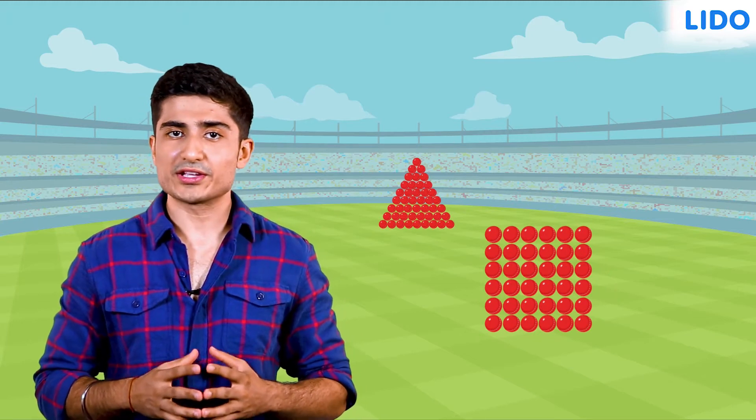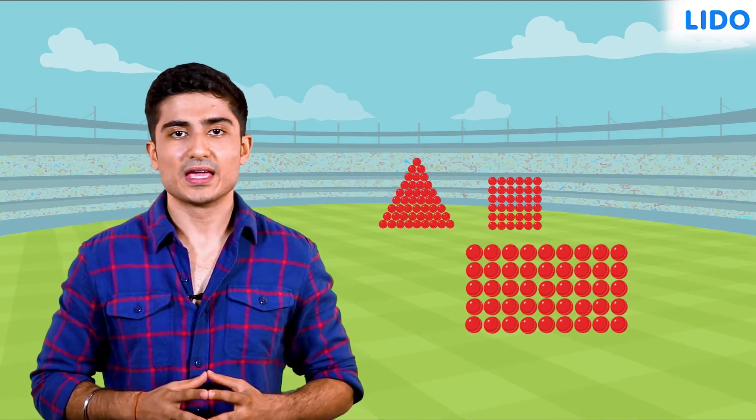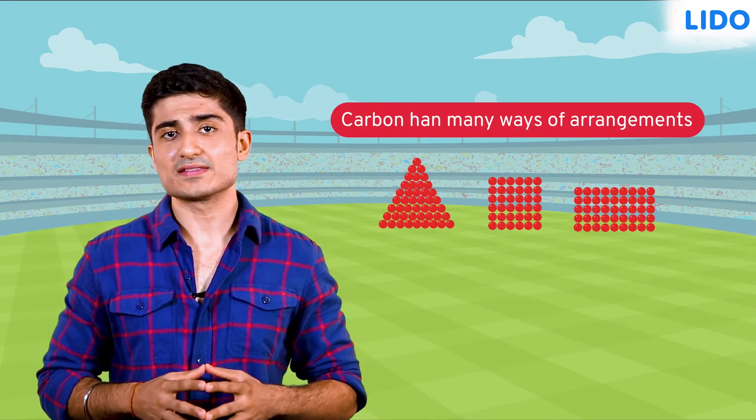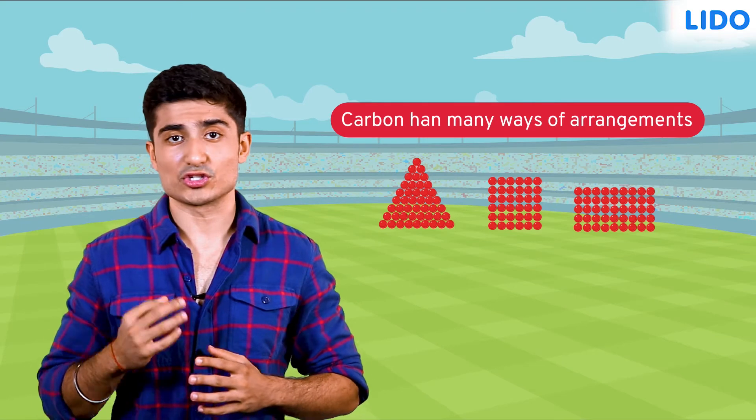Hi guys, I'm in the middle of arranging my cricket balls in an orderly manner. How would you arrange them? Well, different people would arrange them in different shapes. Some of you want to arrange them in the form of a triangle, while some of you want to arrange them in the form of a square. I would probably arrange them to form a rectangle. Did you know that the carbon atoms do the exact same thing? They tend to arrange themselves in different shapes in three dimensions.